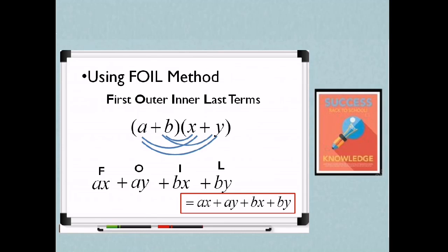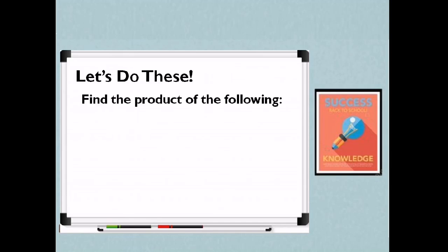So that's how we multiply a polynomial by a polynomial. So let's do these. Find the product of the following. One, three times the quantity 2A plus 3B. So we will be applying the distributive property. So 3 times 2A is 6A. 3 times 3B is positive 9B. The product is 6A plus 9B.